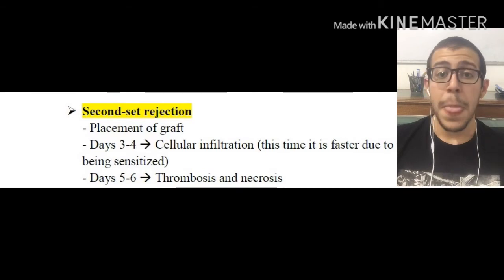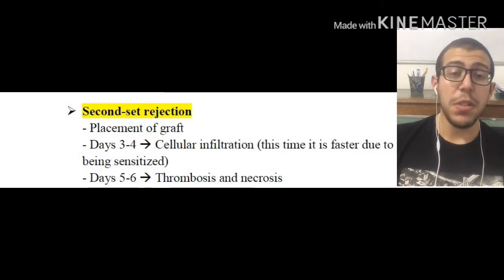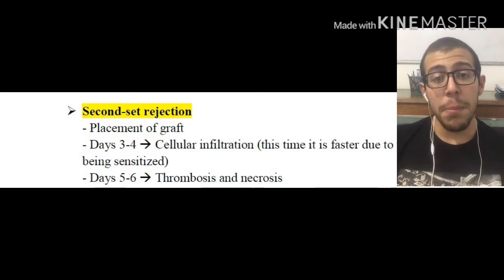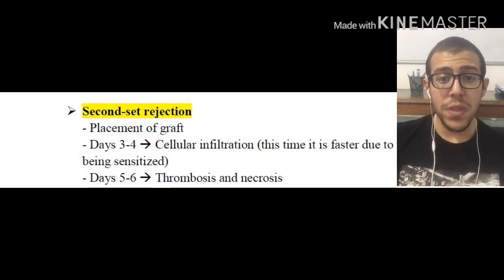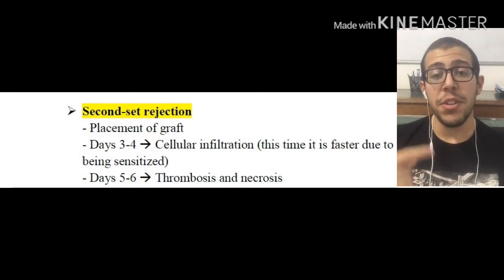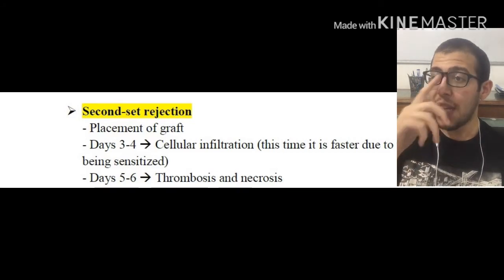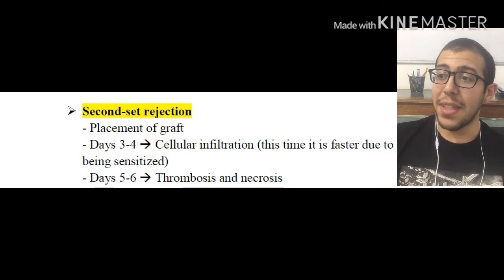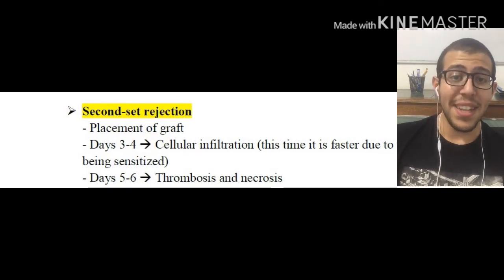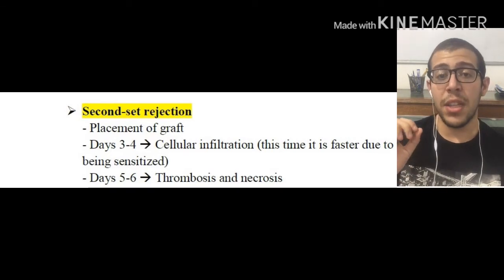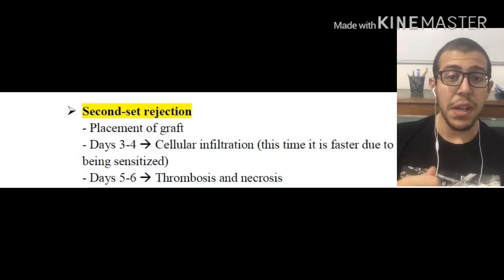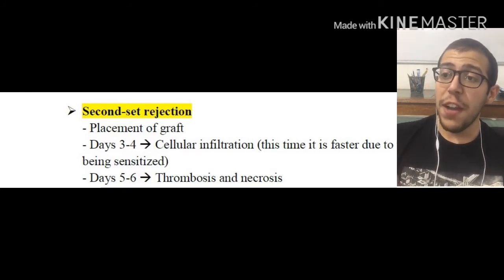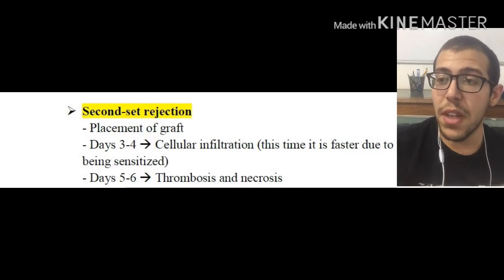Let's look at the second set rejection. Placement of the graft is going to be taking place. In days 3 to 7, since our immune system already knows these grafts, it's going to be rejecting them faster. Days 3 to 4, cellular infiltration is going to be occurring — it is faster due to the cells being sensitized. That word 'sensitized' is very important to understand why we have a faster immune response. Days 5 to 6, thrombosis and necrosis are going to be occurring.